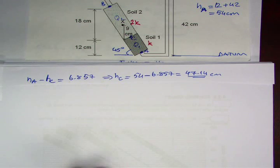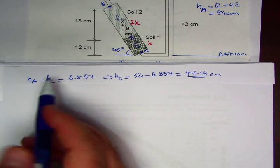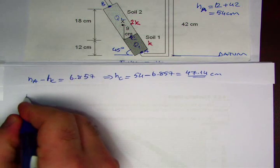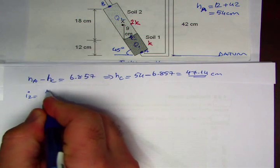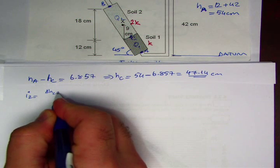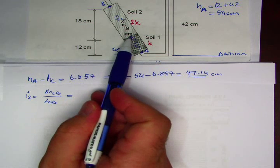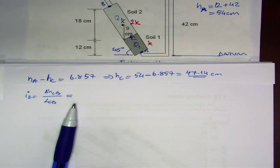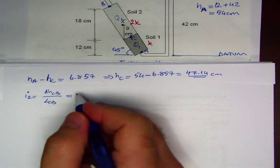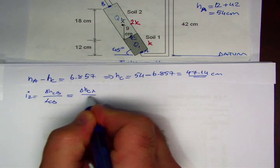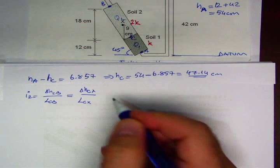Now we can write down the hydraulic gradient equation within soil 2, which is from C to B. That is i2, which is Delta HCB divided by length CB. That's also equal to Delta HCX divided by LCX within a soil sample.